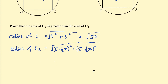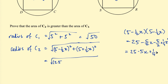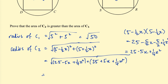We need to expand the brackets inside the square root. Expanding (5 − x/2)² gives 25 − 5x + x²/4. Expanding (5 + x/2)² gives 25 + 5x + x²/4. So we have √(25 − 5x + x²/4 + 25 + 5x + x²/4).